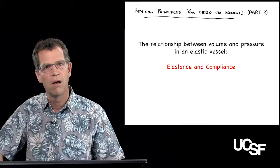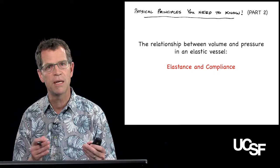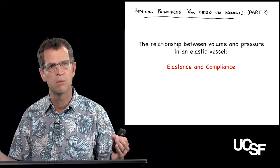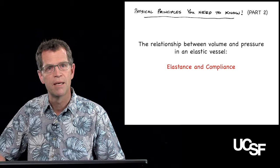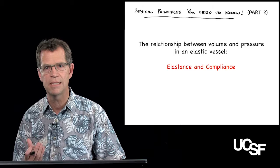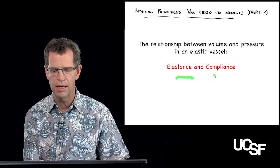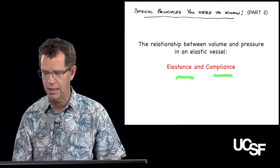The second principle relates to the fact that all blood vessels and the heart are elastic vessels — their walls contain elastic proteins that, when stretched, attempt to regain their original shape and push back, just like an elastic band or balloon. These elastic elements in the walls of blood vessels and the heart have a big impact on pressure generation inside those vessels. Understanding elastance and compliance is really important for understanding how the heart and blood vessels work.